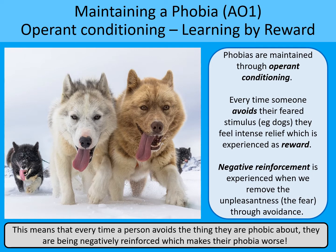The maintenance of the phobia is learned through reward, so it's learned through operant conditioning. When you're phobic of something, what you're rewarded for is avoidance of the thing you're scared of. I used to have a dog phobia, and I would avoid dogs as much as I could. Every time I avoided the dog I would feel intense relief — that is negative reinforcement, because negative reinforcement means the removal of something unpleasant causes a reward. So avoidance of a dog removes the unpleasantness of the fear, and every single time somebody avoids their phobic stimulus you are negatively reinforcing the behaviour of avoidance, and that maintains the phobia.